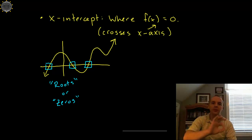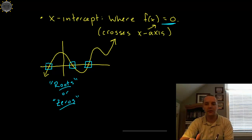X intercepts, this is the place where the function crosses the x axis so this particular function here has 3 x intercepts. Some alternate names for x intercept could be called a root of a function or the zero of a function but these are the places where it crosses the x axis. To find these you'll take your function and set it equal to 0 and try to solve this.